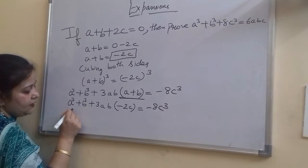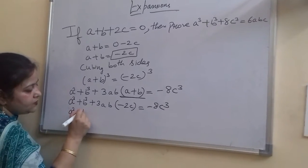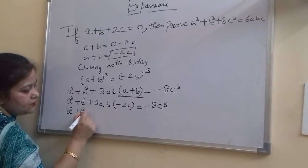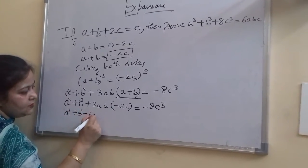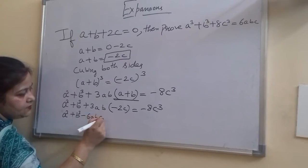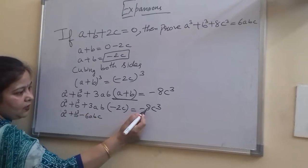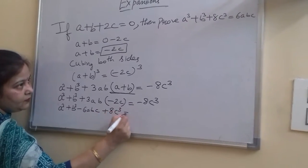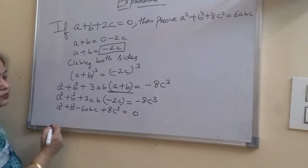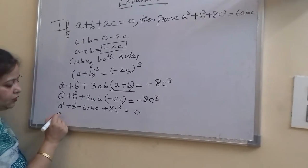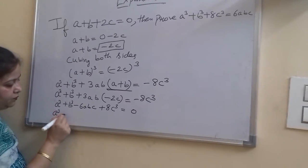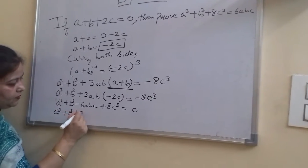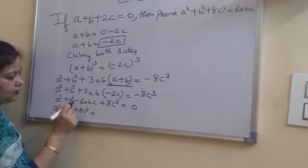It becomes a cube plus b cube plus 3ab, and in place of a plus b we write minus 2c, giving a cube plus b cube minus 6abc equals minus 8c cube, which rearranges to a cube plus b cube plus 8c cube equals 6abc.